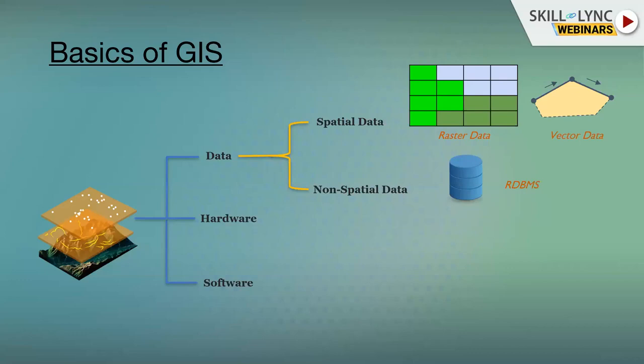Vector data, by contrast, stores the same geographic entities in the form of X and Y coordinates. For example, a street that runs one kilometer is stored as a starting coordinate and an ending coordinate. Points, polygons, and lines are all forms of vector data. Raster data is generally obtained through remote sensing techniques.